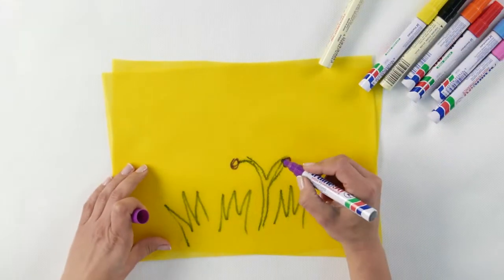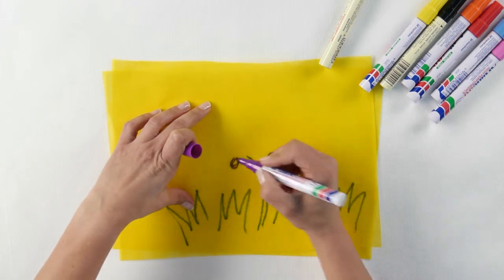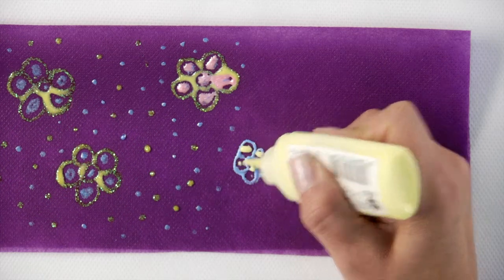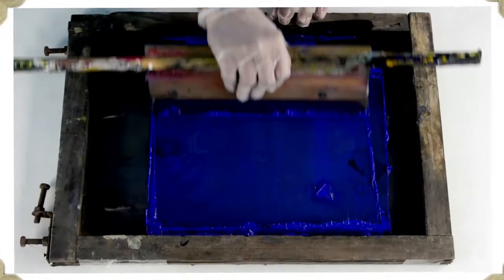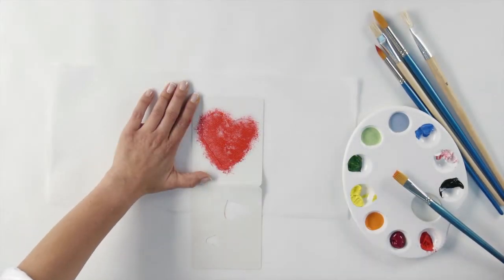Coloring. The possibilities for coloring SmartFab are almost endless. You can use markers and paints. You can use gouache, tempera or acrylic. And you can even silk screen SmartFab, or use stencils with a sponge and acrylic paint.